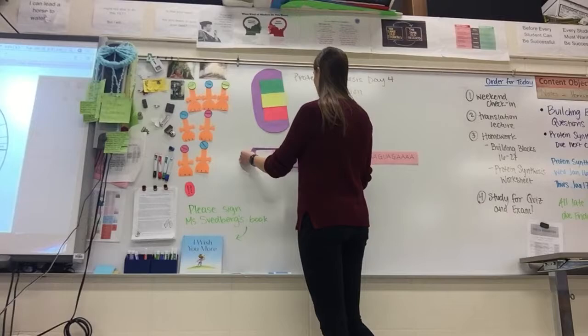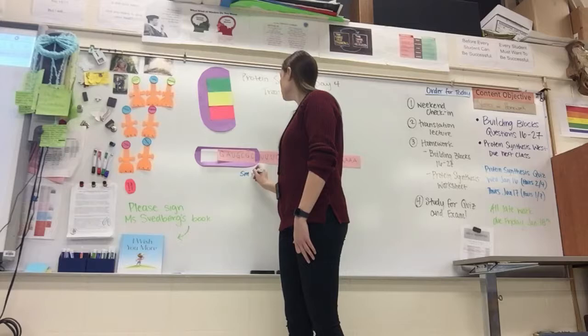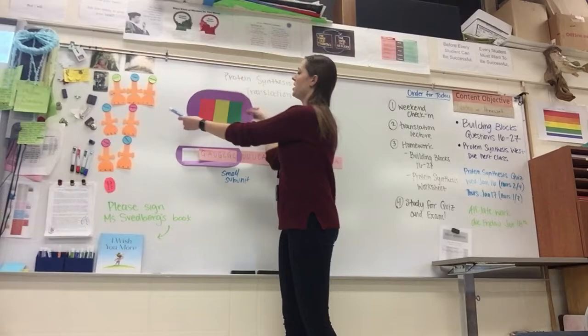When we're looking at the ribosome, we have two different parts. We have the small subunit, which is the bottom part of the purple here, and we have the large subunit, which is the big purple piece.